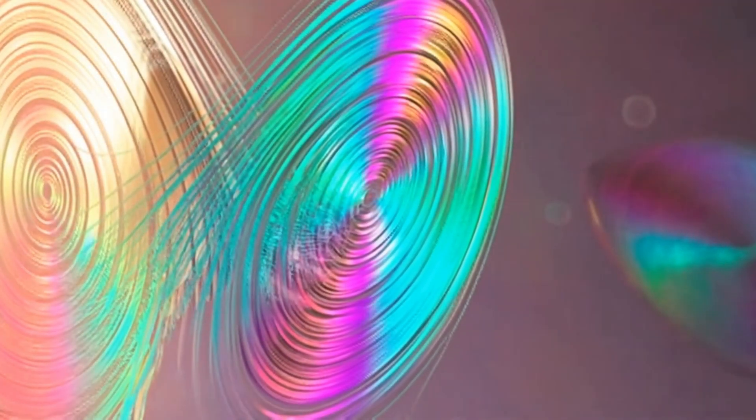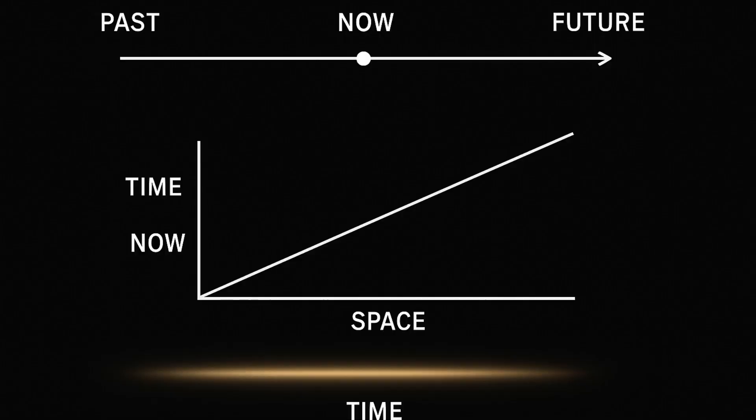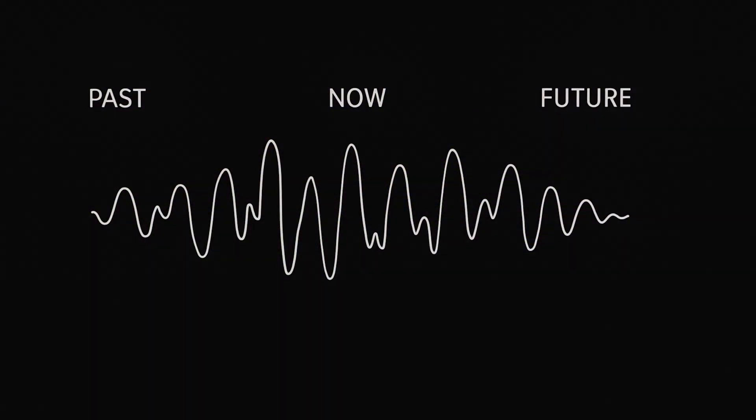Think about that. For centuries, we thought time was a straight line. A constant, unstoppable river flowing forward, dragging everything with it. But maybe, that river isn't perfectly smooth. Maybe it ripples. Maybe, under the surface, it vibrates, in repeating waves that shimmer through the quantum world.